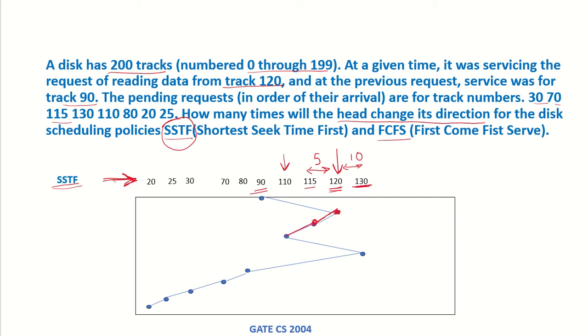Then the next request is for the closest ones, which are 90 and 130, but from 110 both are at equal distance. So let's assume that it is going to 130, and then it will go to 80, 70, 30, 25, and 20.